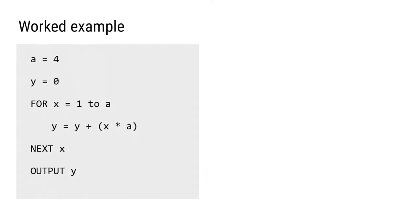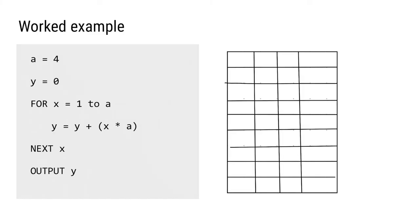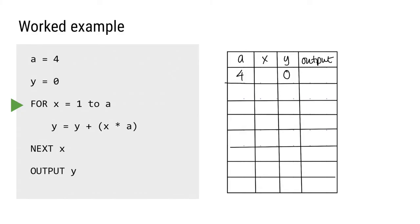In this second algorithm we have three variables: a, x, and y, and an output. So we're going to have four columns in our trace table with headers a, x, y, and output. The algorithm starts by setting the value of a to 4, so that goes into the trace table in the a column. Then y gets the value 0, which we put in the y column. The next line says 'for x equals 1 to a', and since a is a variable with value 4, the for loop is going to run 4 times.